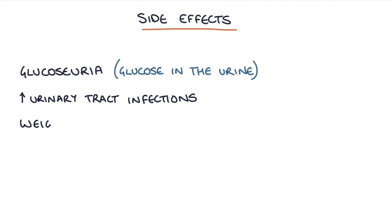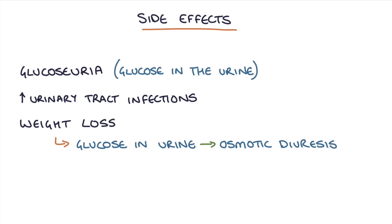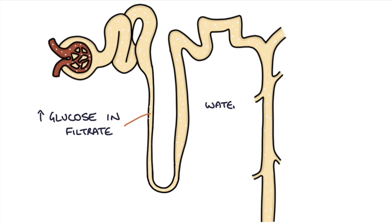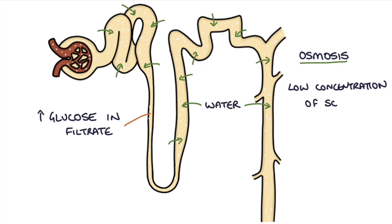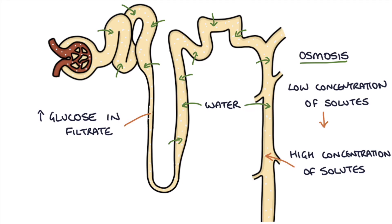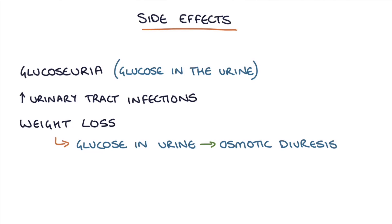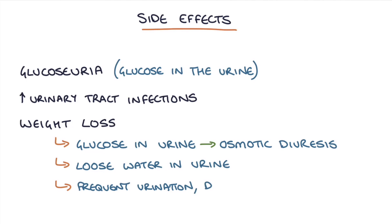Another side effect is weight loss. When you excrete a lot of glucose in the urine, this can cause an osmotic diuresis, meaning the high level of glucose in the filtrate draws water into the urine through osmosis — water moves from the area of low solute concentration into the area of high solute concentration. This causes the person to lose more glucose and more water in the urine, leading to frequent urination, dehydration, low blood pressure, and weight loss.